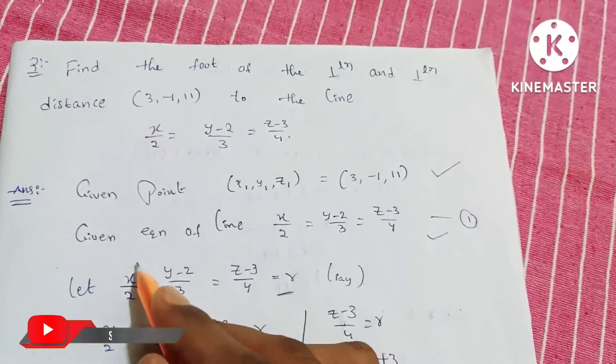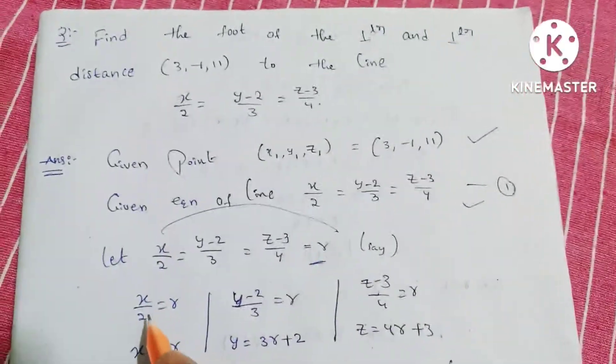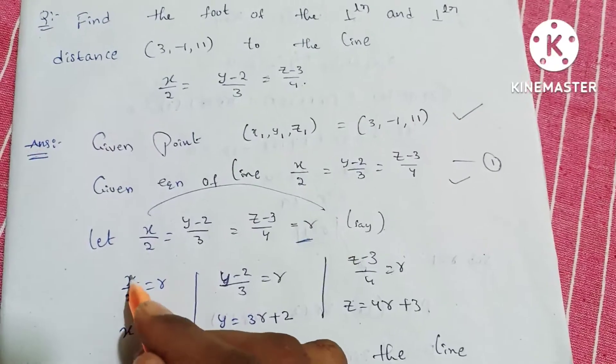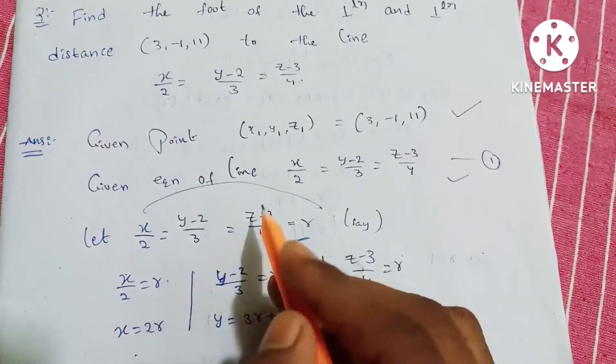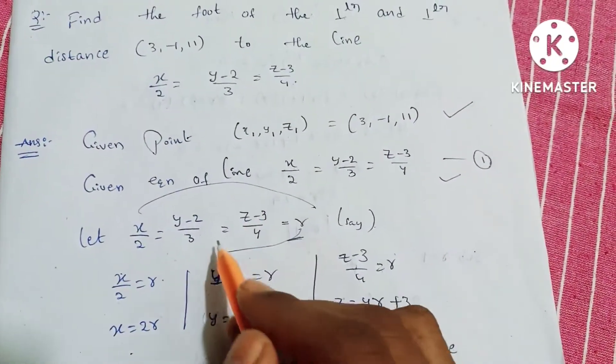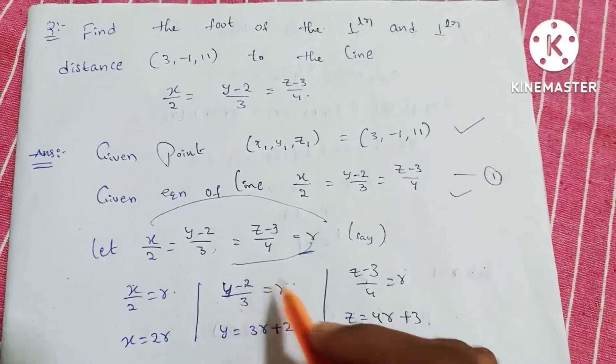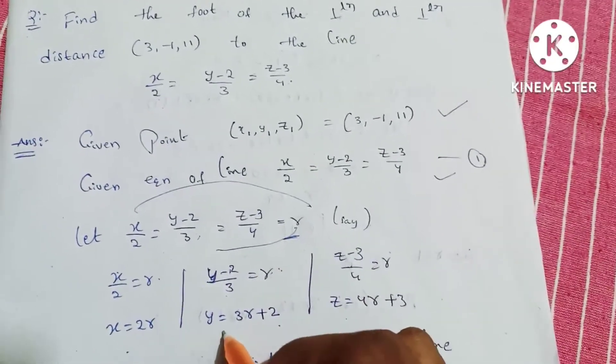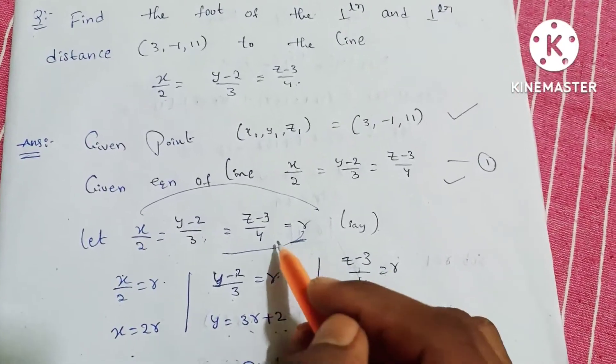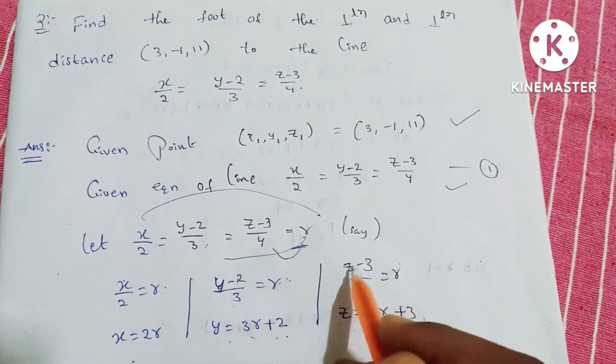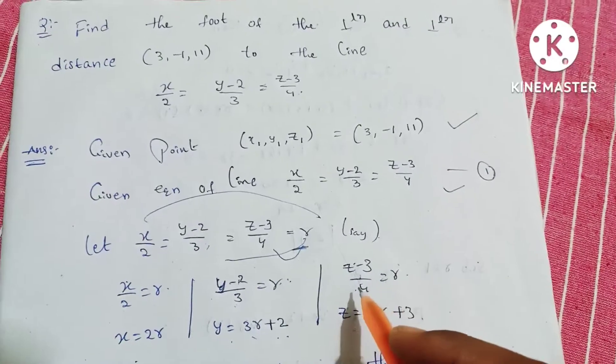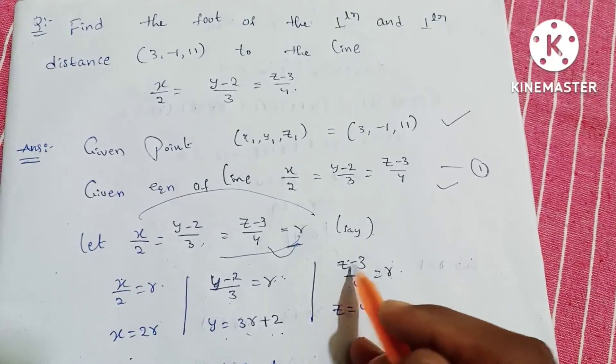Let x/2 equal to r. So x is equal to 2r. Similarly for y, y-2 by 3 equals r, so y equals 3r plus 2. Same for z, z-3 by 4 equals r, 4 times r minus 3 on the right side gives z equals 4r plus 3.